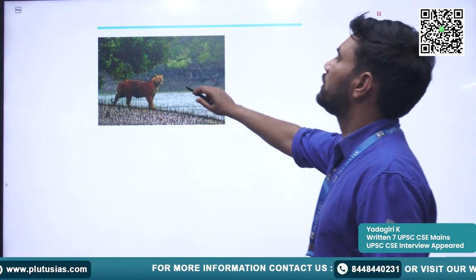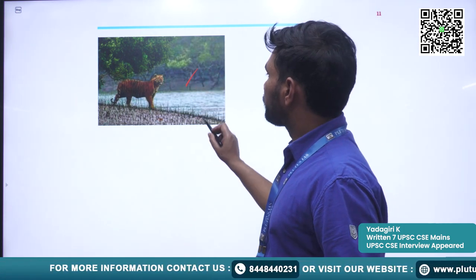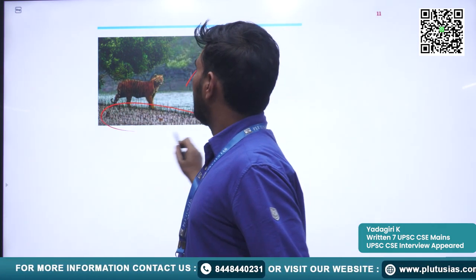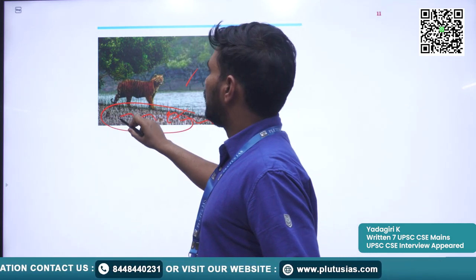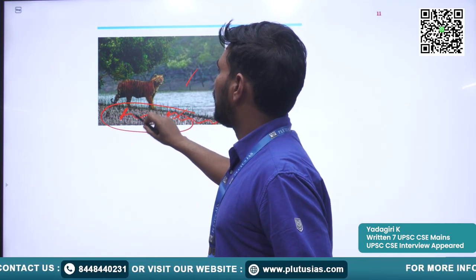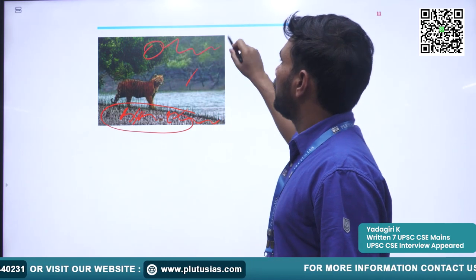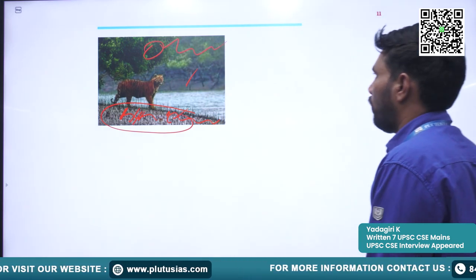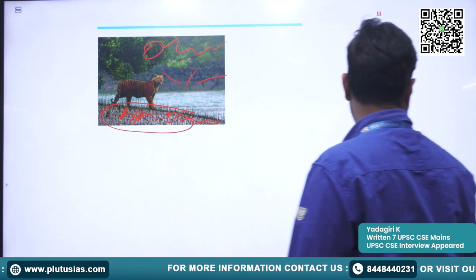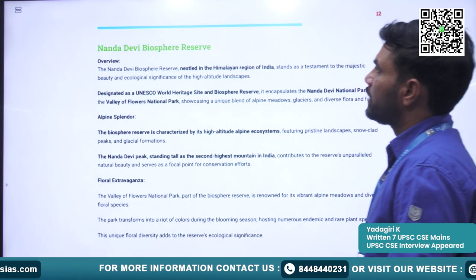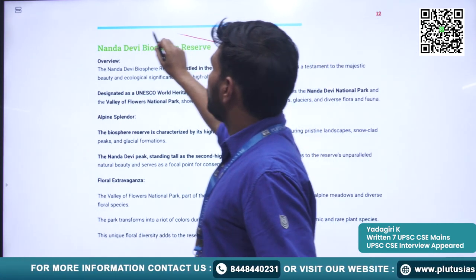You can see the Royal Bengal Tiger, the mangrove forest, and the characteristic aerial roots of mangroves in this biosphere reserve. Next is Nanda Devi Biosphere Reserve.